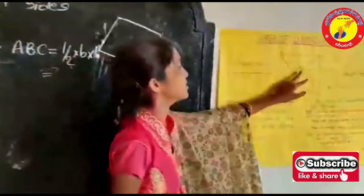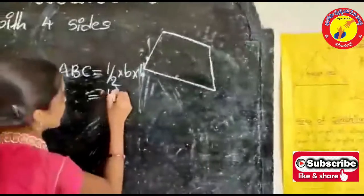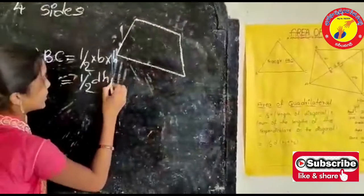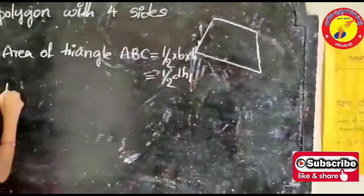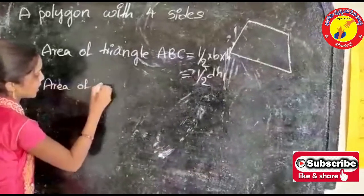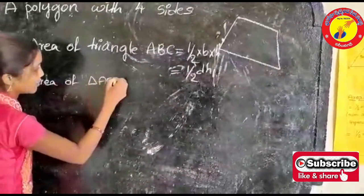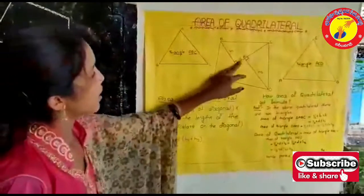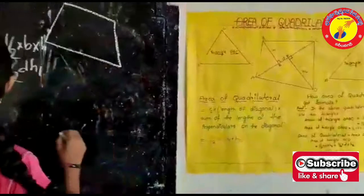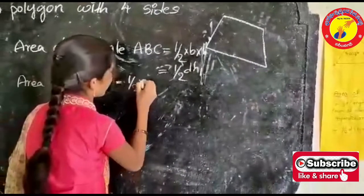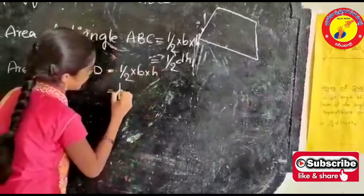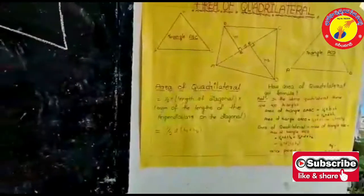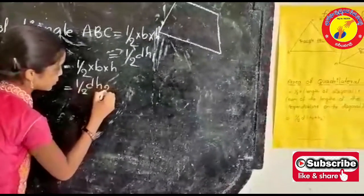Here the base is D. Therefore area of triangle ABC = 1/2 × D × H1. The next triangle is area of triangle ACD. Here also we take AC as the base, which means D as the base. So area of triangle ACD = 1/2 × base × height = 1/2 × D × H2.